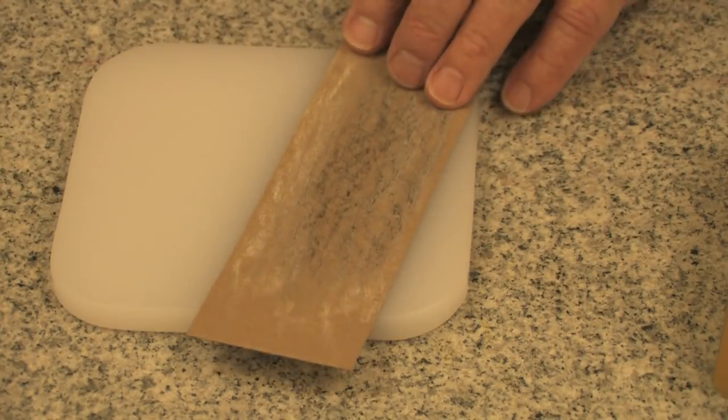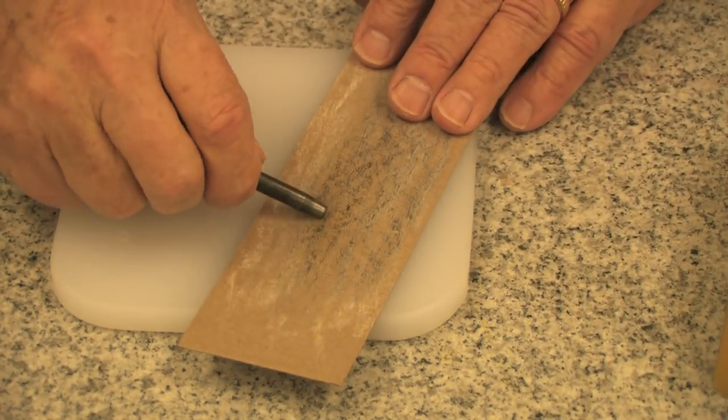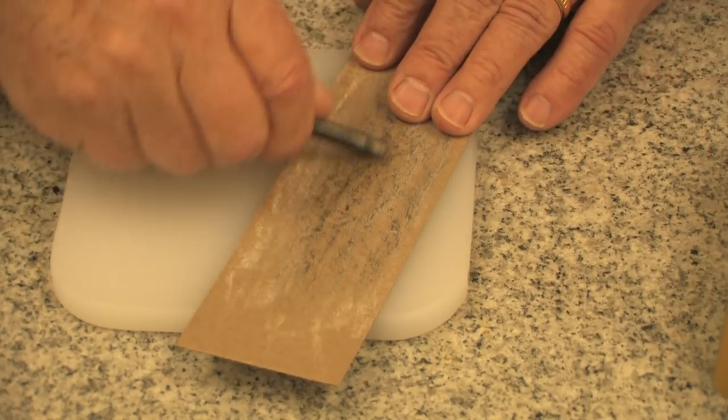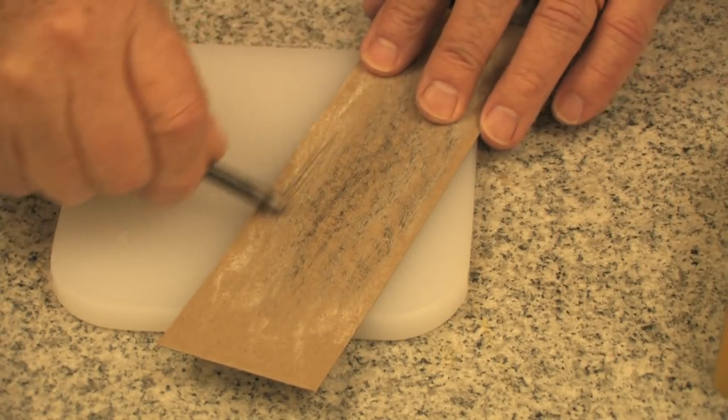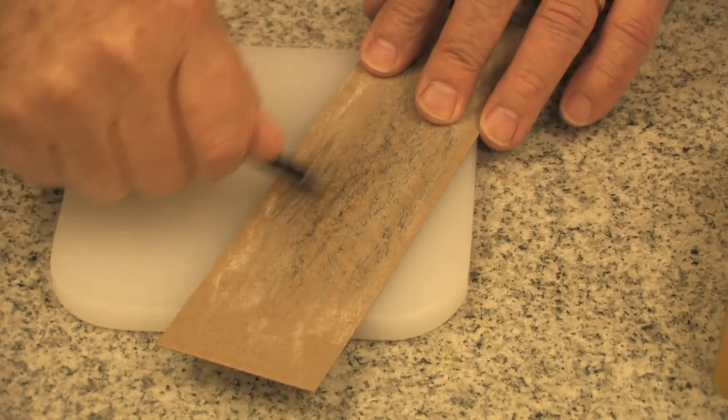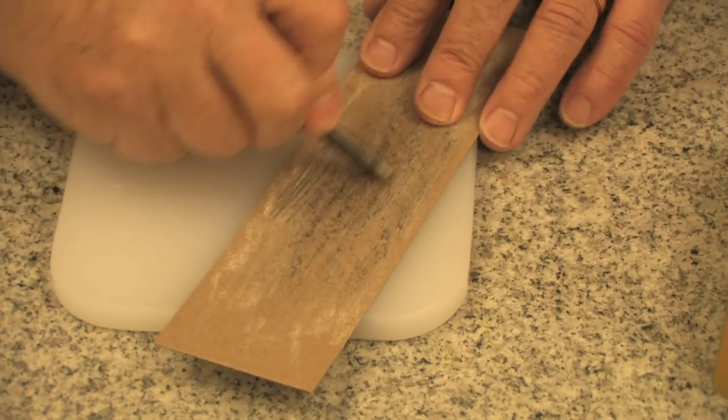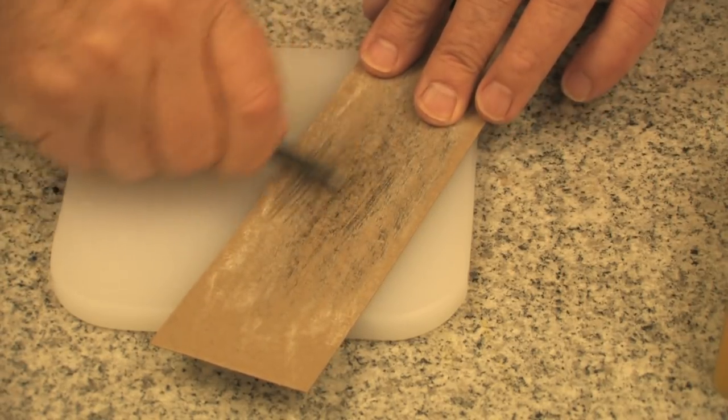Now I'm also taking my strop, which is a piece of cardboard with jeweler's rouge rubbed on it, and I'm continuing to polish my punch. If you do this to all your punches, your punching will be much easier.